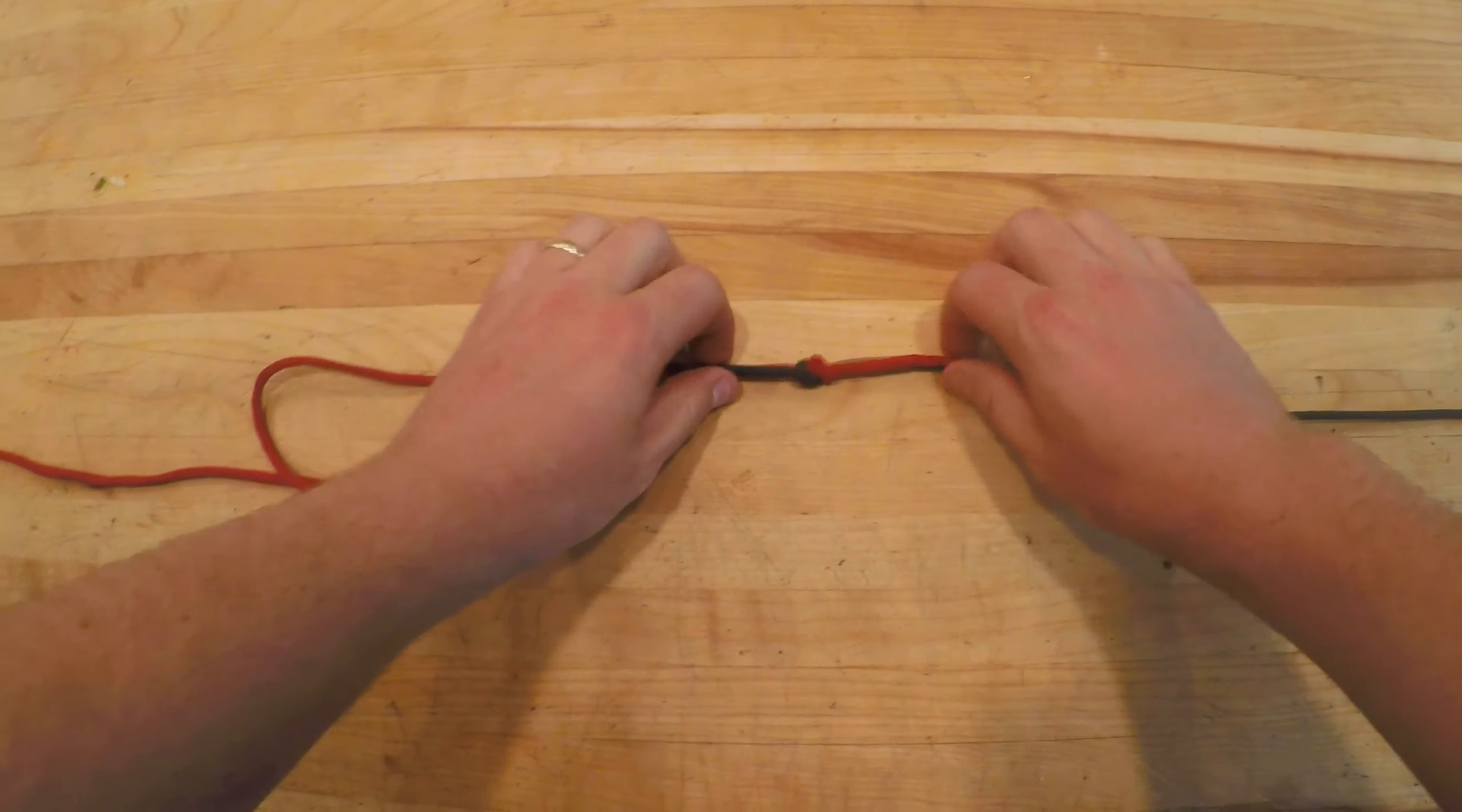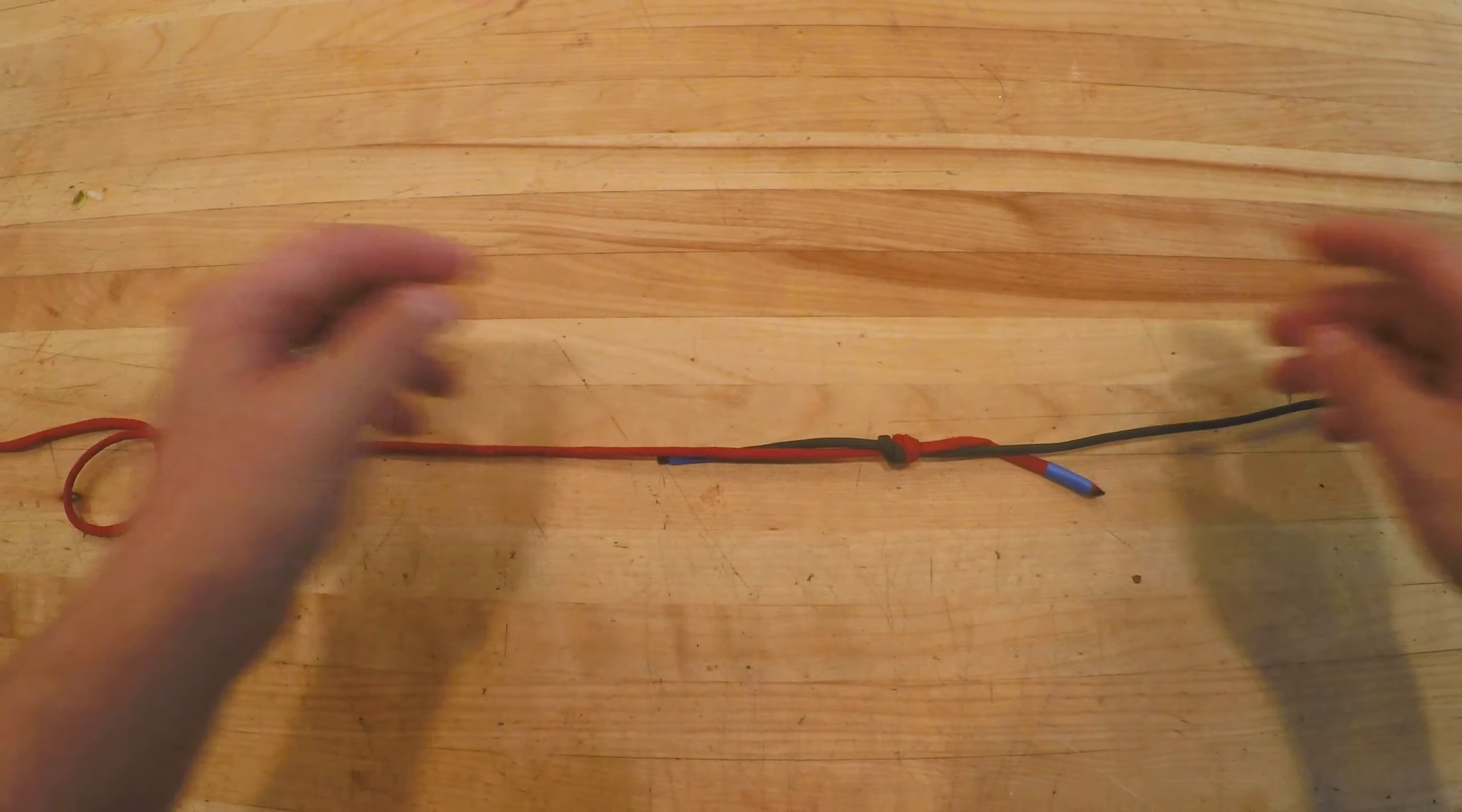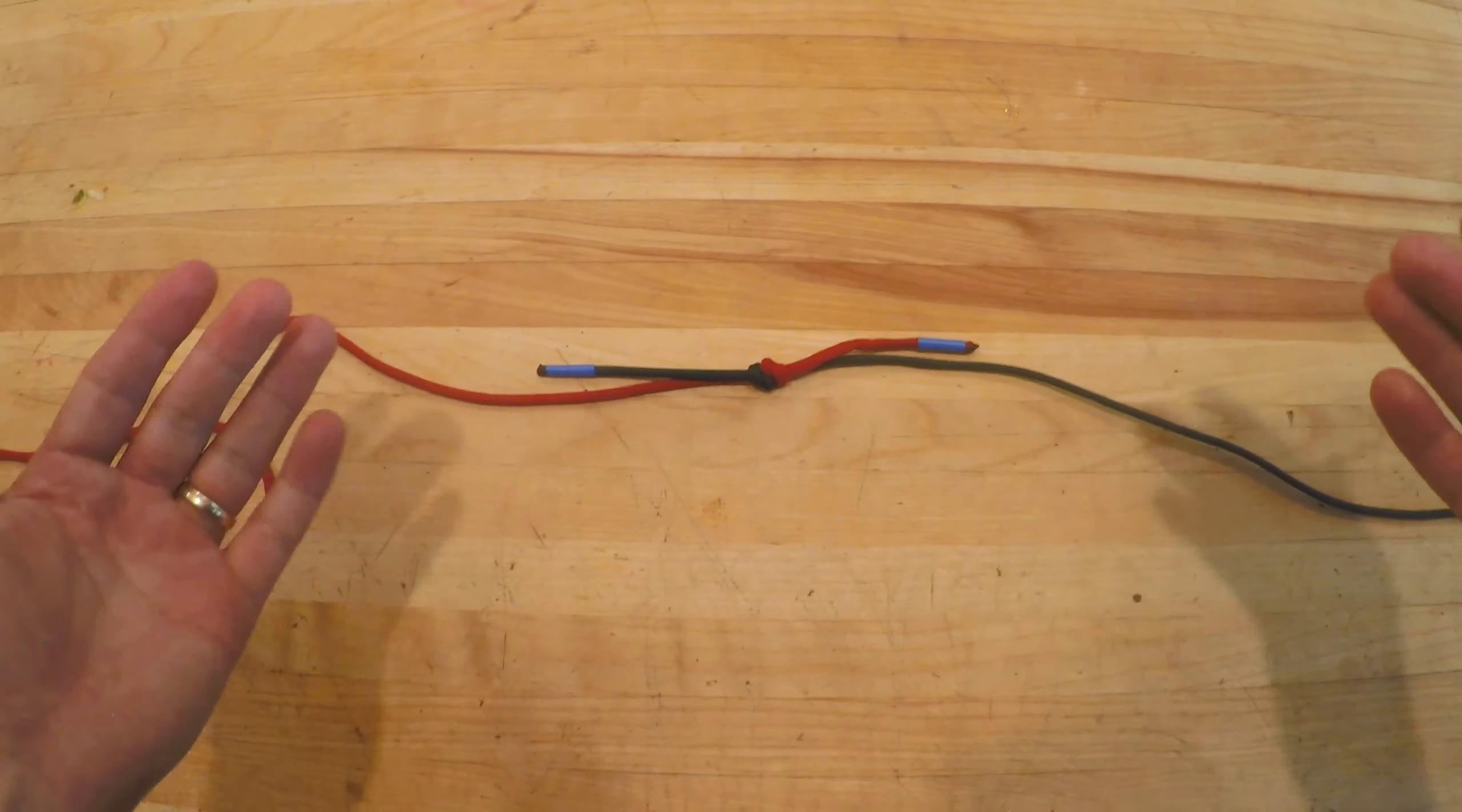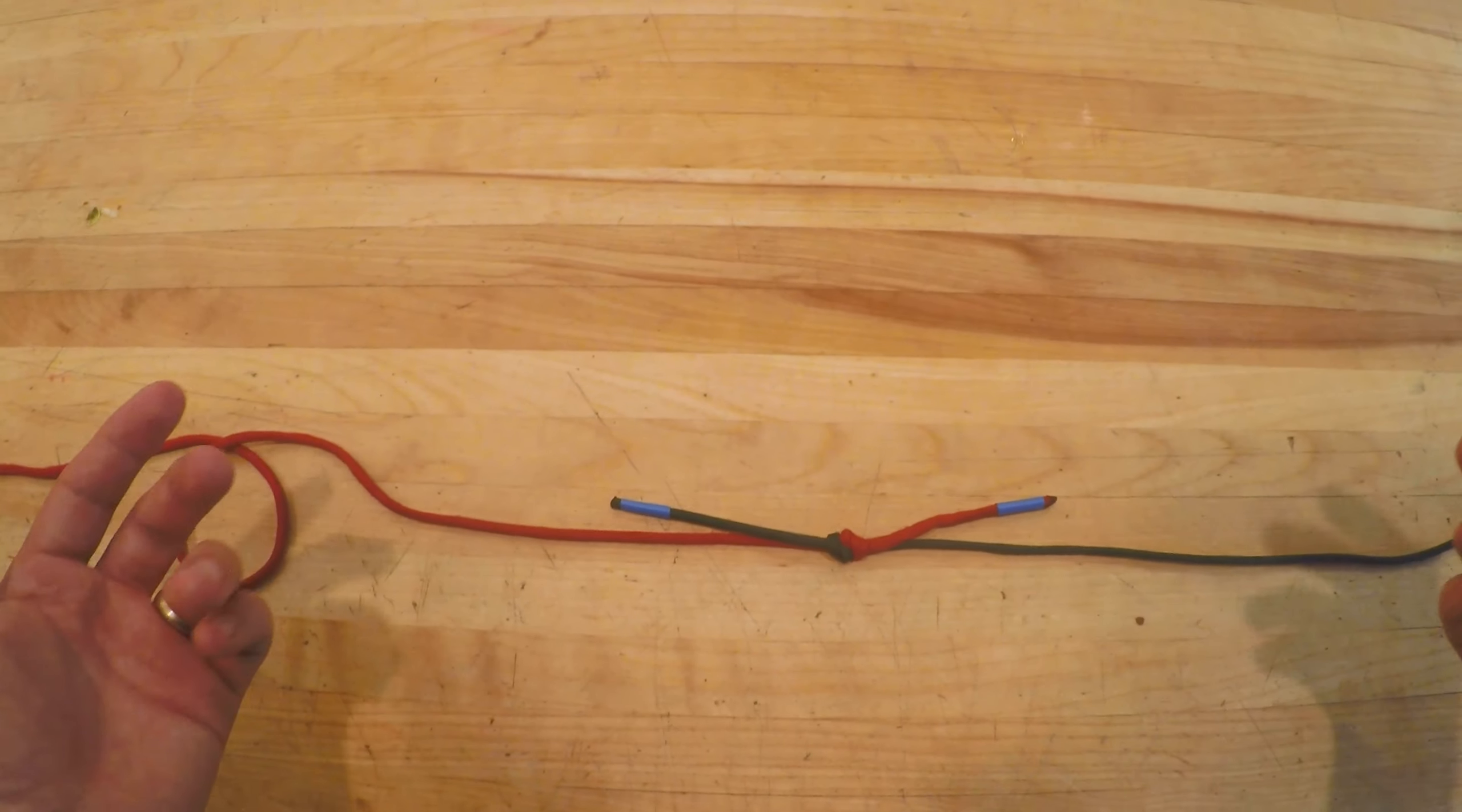Now this should be strong enough to hold, say, if you're hanging a clothesline or you're trying to set a rain shelter. This should be good and weight bearing but shouldn't necessarily be used in a life and death situation. The next knot we're going to show you, the double, can be used for example in rock climbing.